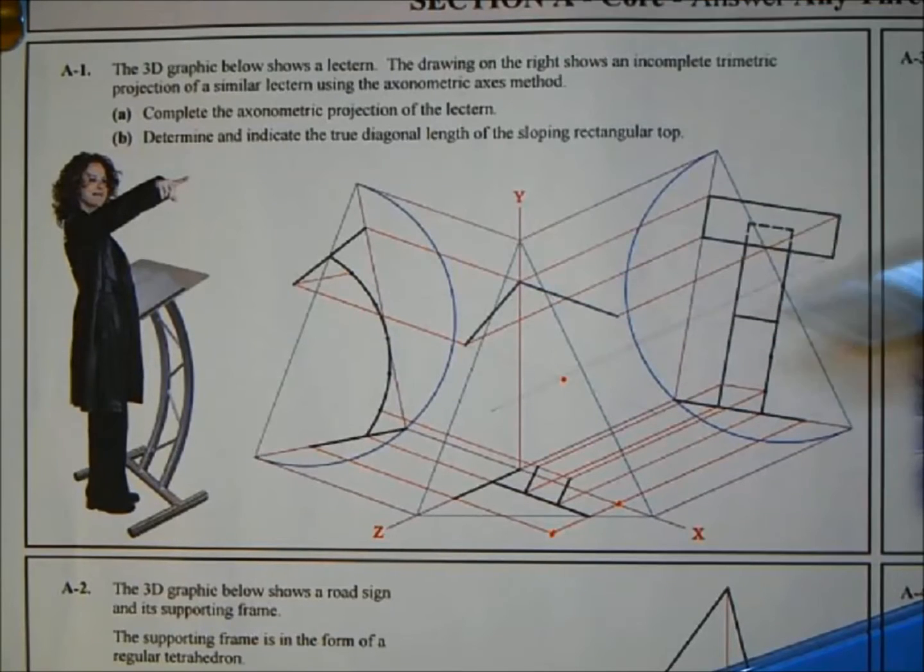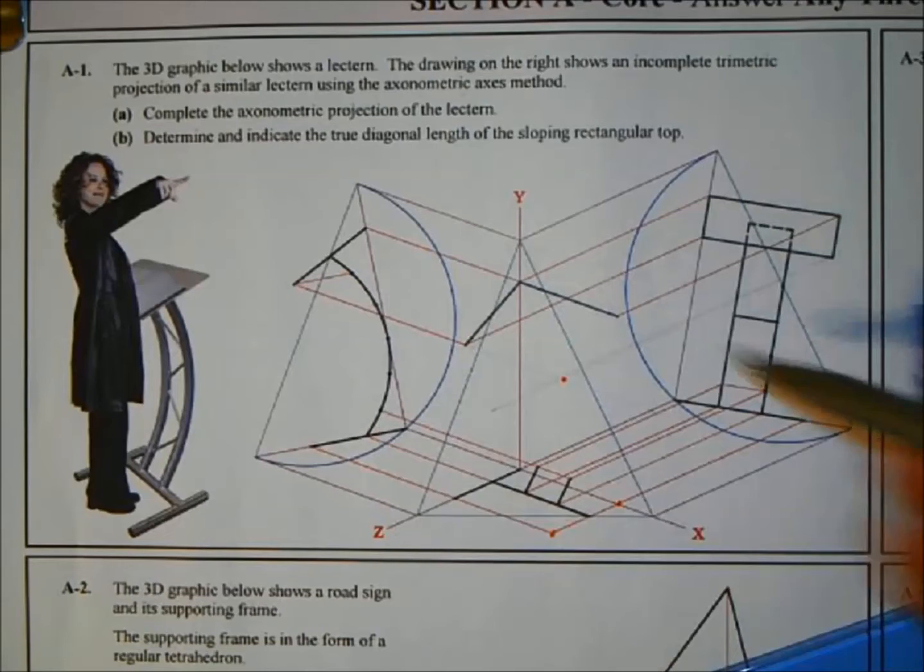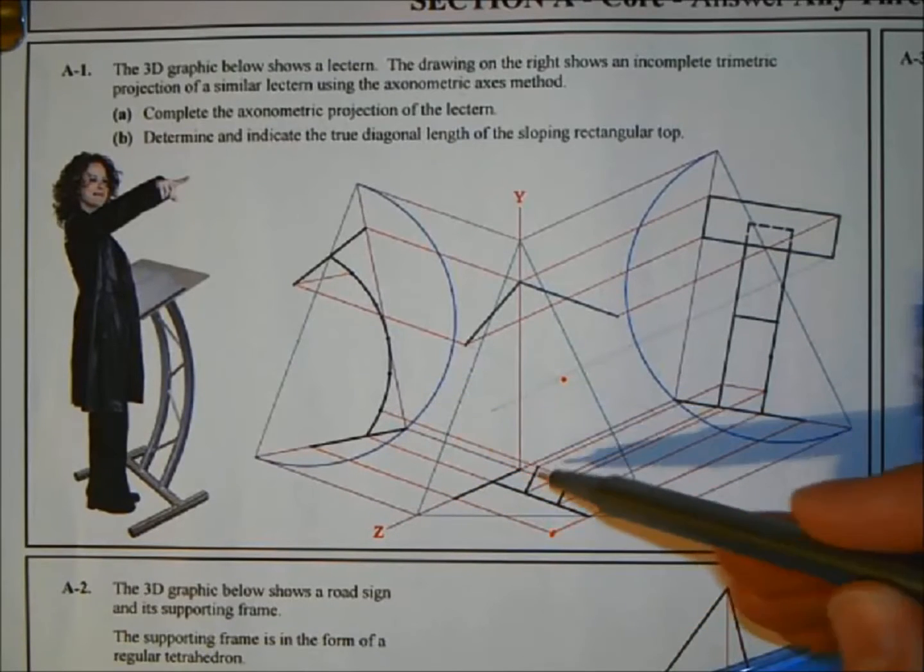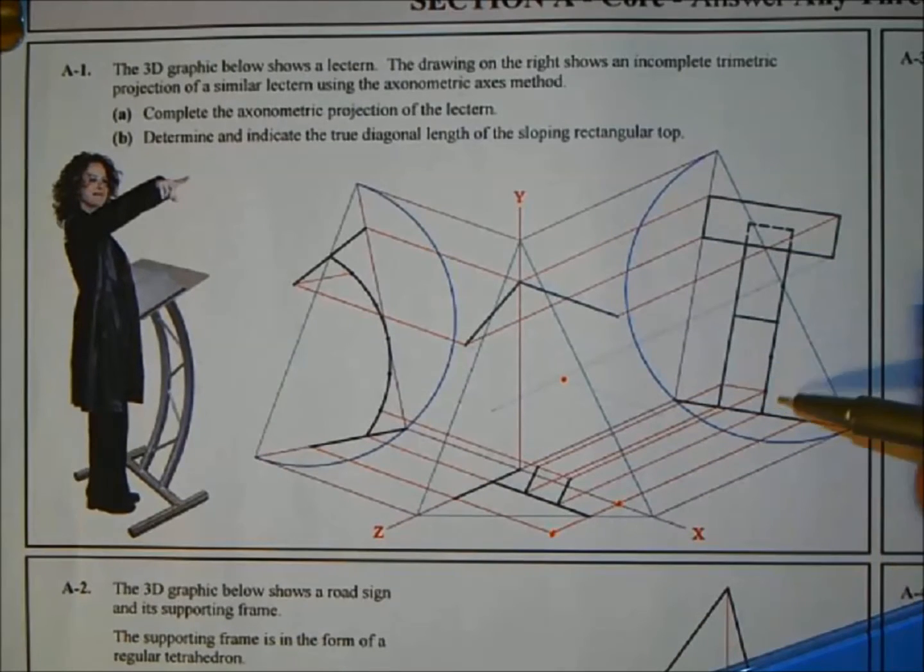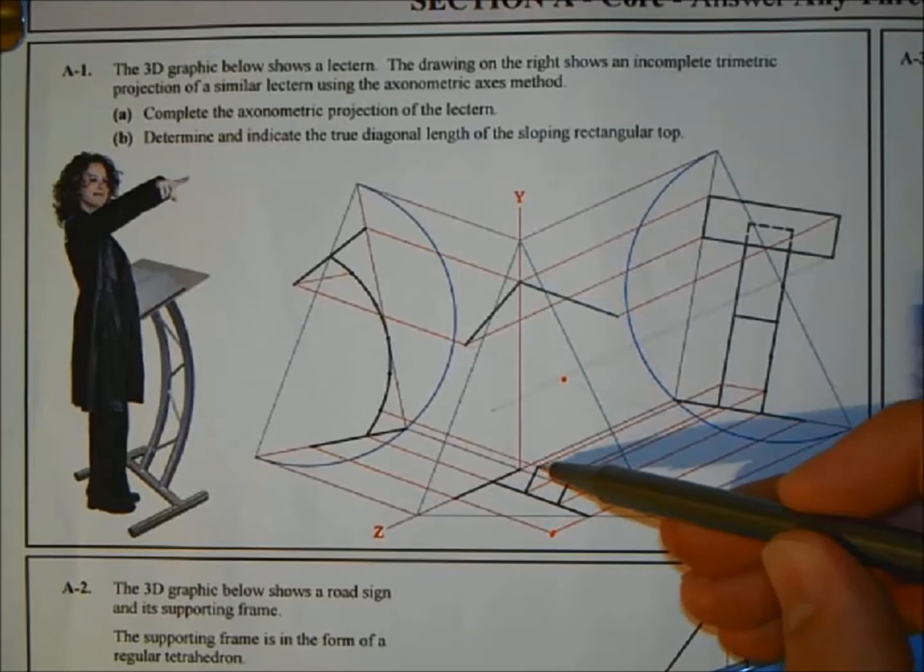So if you project these heights down to the 3D and down here from the end view, it'll give you a range of points. Look, they're even showing how they got the first one. That was the first height giving you one line from the end view. It'll give you two points from the elevation, and now that gives you points on the curves.